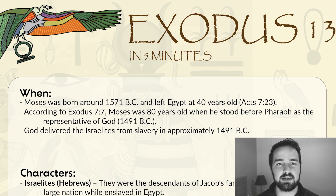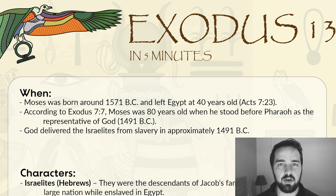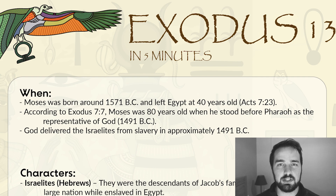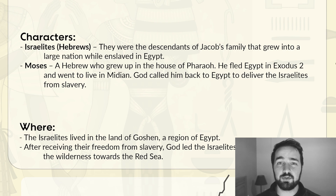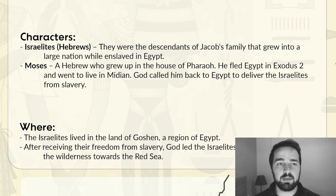For today, let's talk about Exodus chapter 13. When did the events of Exodus 13 take place? Moses, who has been our main character, was born about 1571 BC, and he was 80 years old when he stood before Pharaoh and gave Pharaoh God's command to let the Israelites go from slavery — so approximately 1491 BC. Our main characters are Moses and the Israelite people. Moses was God's chosen man to deliver the Israelites from slavery, and the Israelites were the large group of people that had grown from the 12 sons of Jacob — a large nation, descendants of Abraham, Isaac, and Jacob.